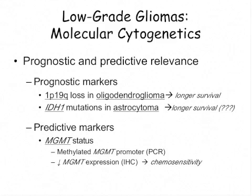There is one predictive marker that seems to predict a better response to alkylating chemotherapy, and that's MGMT status. This can be measured by either methylated MGMT promoter status via PCR or immunohistochemistry. Decreased expression of MGMT, or increased methylation — meaning MGMT function is being blocked — tends to portend a better response to chemotherapy.